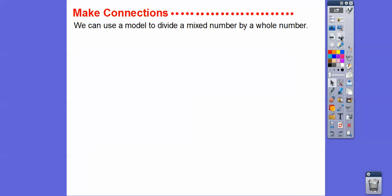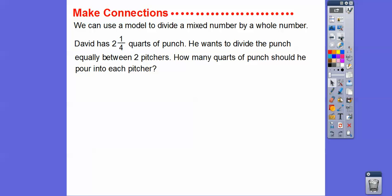All right, so we can use a model to divide a mixed number by a whole number, and that's what we're going to do with this one. So David has 2 and 1/4 quarts of punch. He wants to divide the punch equally between two pitchers. How many quarts of punch should he pour into each pitcher? So what we're going to do is divide this 2 and 1/4 quarts right here divided by the two pitchers right here. So we're going to figure out how many quarts are going to be in each pitcher right there.